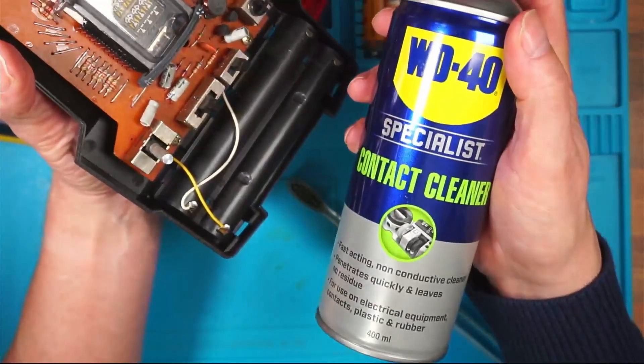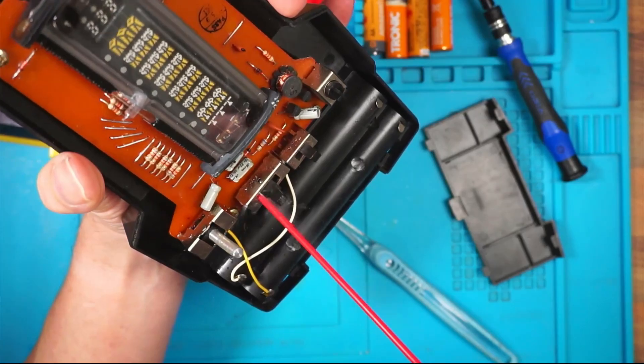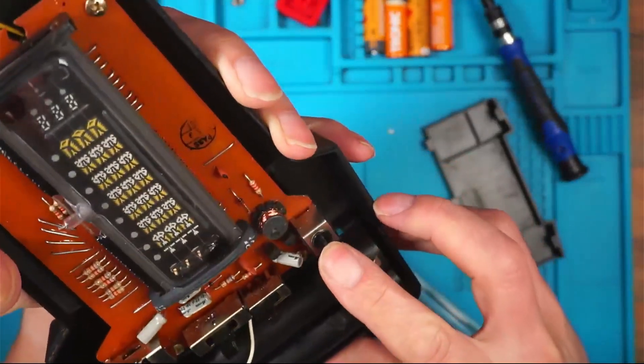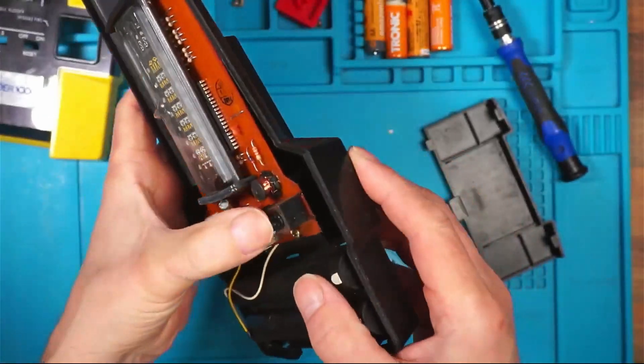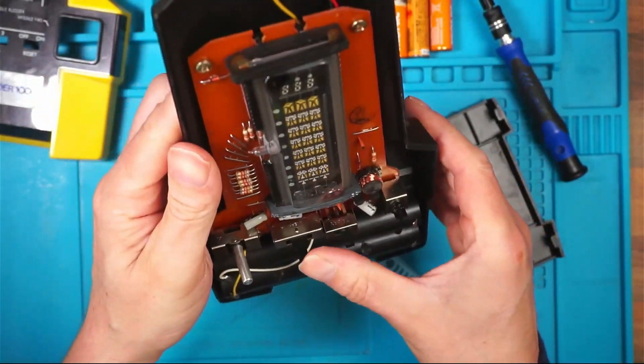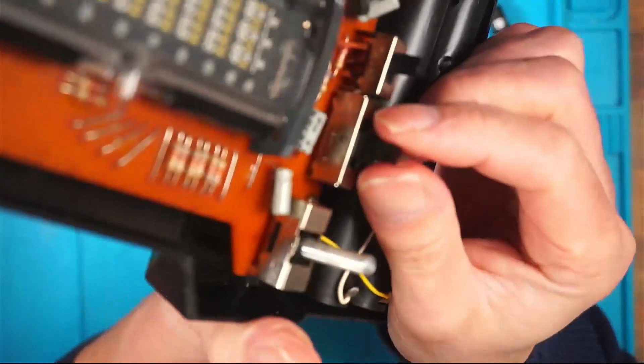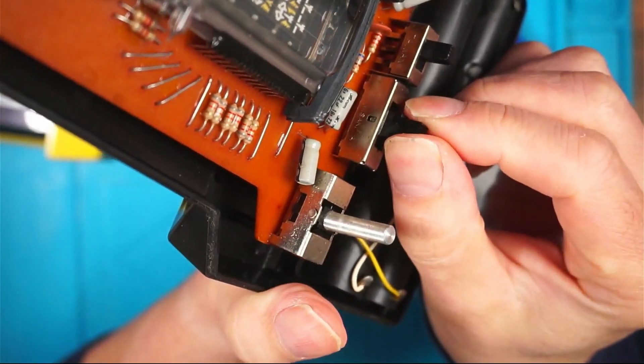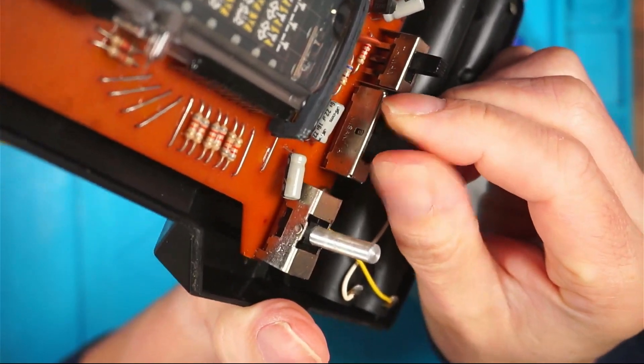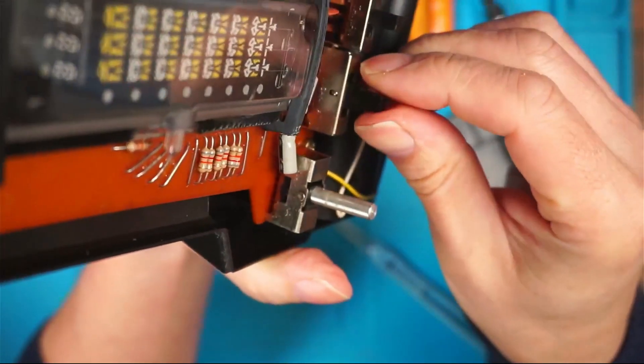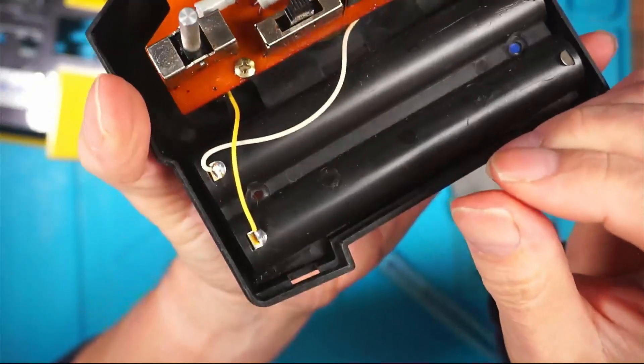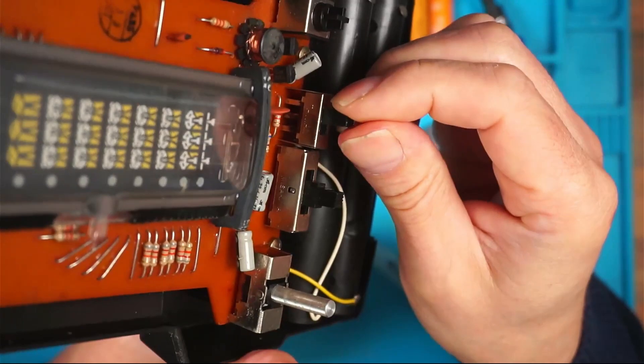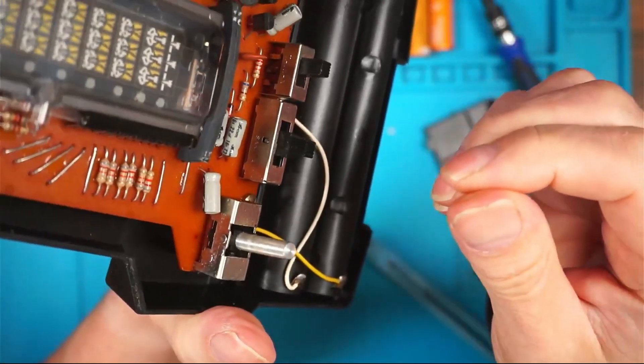Right, this is contact cleaner. I don't think I'm going to get into there. It looks like there's a little ball bearing in there. I wonder if that's a ball bearing. They don't make switches like that anymore. These are proper clunk, click, every trip type of switch.